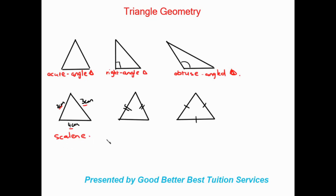Moving on to this triangle, we can see that two sides are marked as equal by the tick marks. When we're dealing with a triangle that has two equal sides, this is what we call an isosceles triangle.